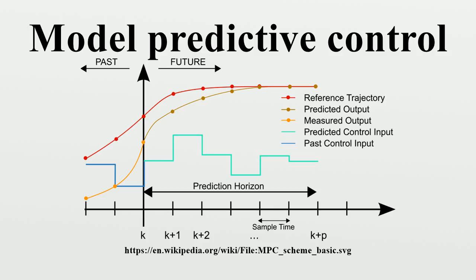While many real processes are not linear, they can often be considered to be approximately linear over a small operating range. Linear MPC approaches are used in the majority of applications with the feedback mechanism of the MPC compensating for prediction errors due to structural mismatch between the model and the process.